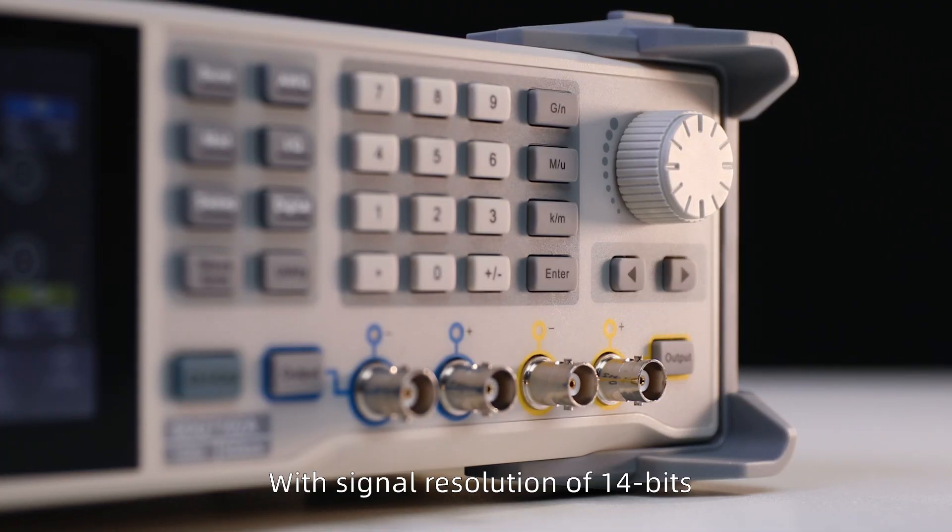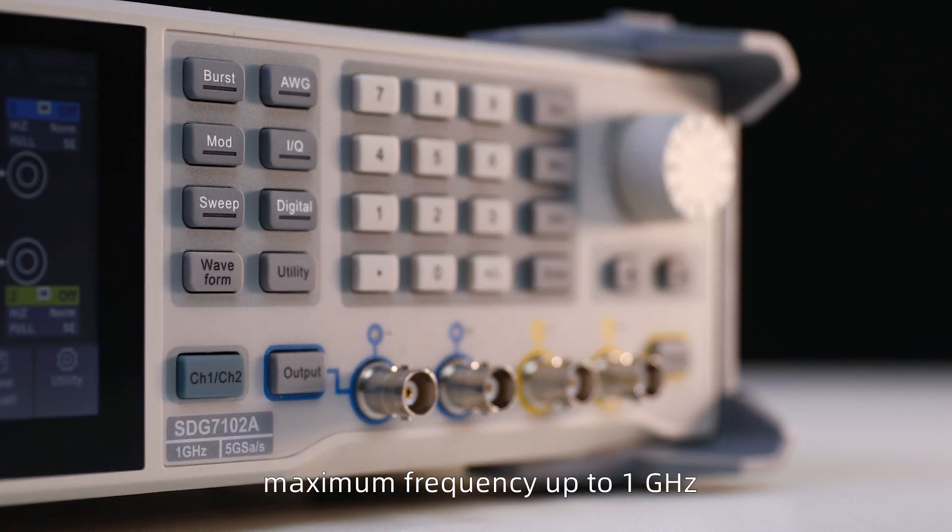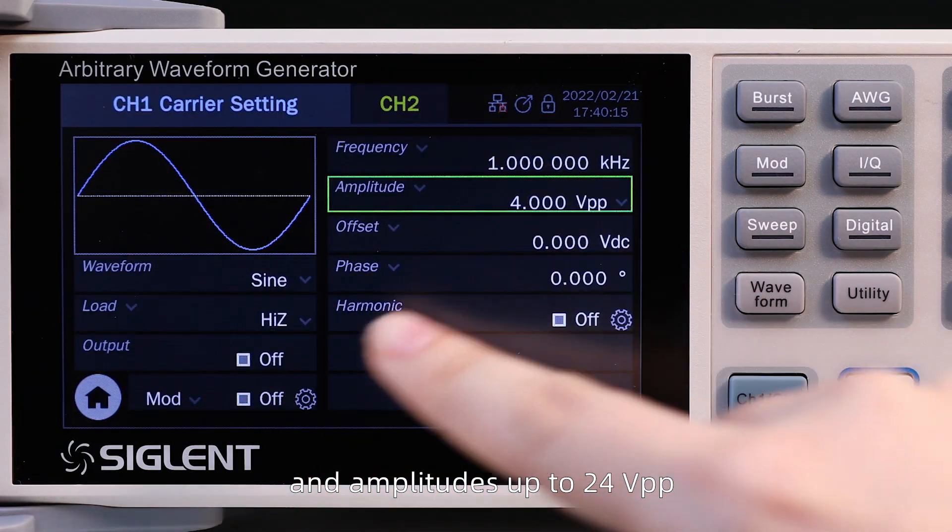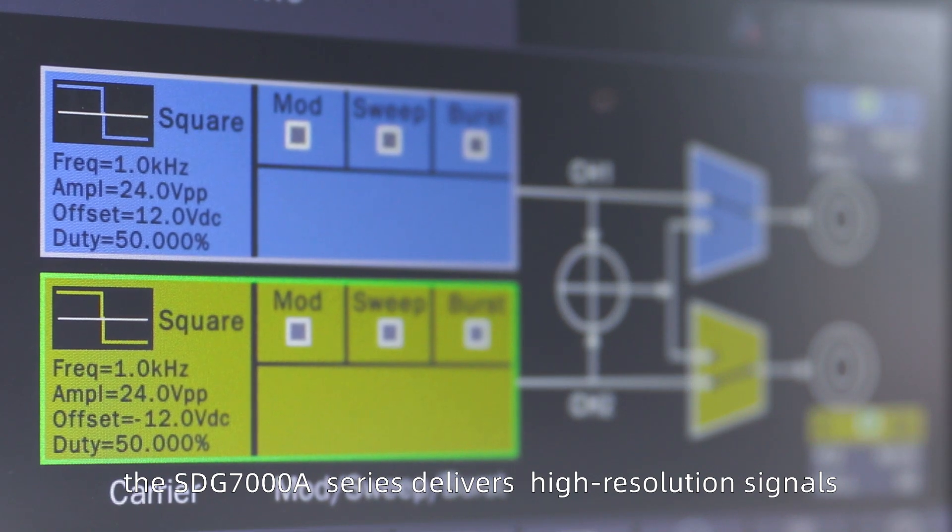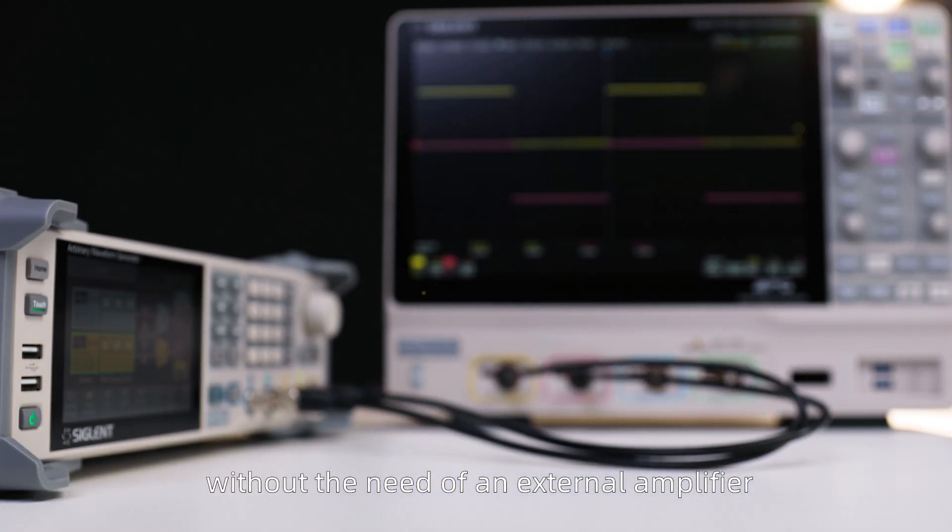With signal resolution of 14 bits, maximum frequency up to 1 gigahertz, and amplitudes up to 24 volts peak-to-peak, the SDG-7000A series delivers high resolution signals without the need of an external amplifier.